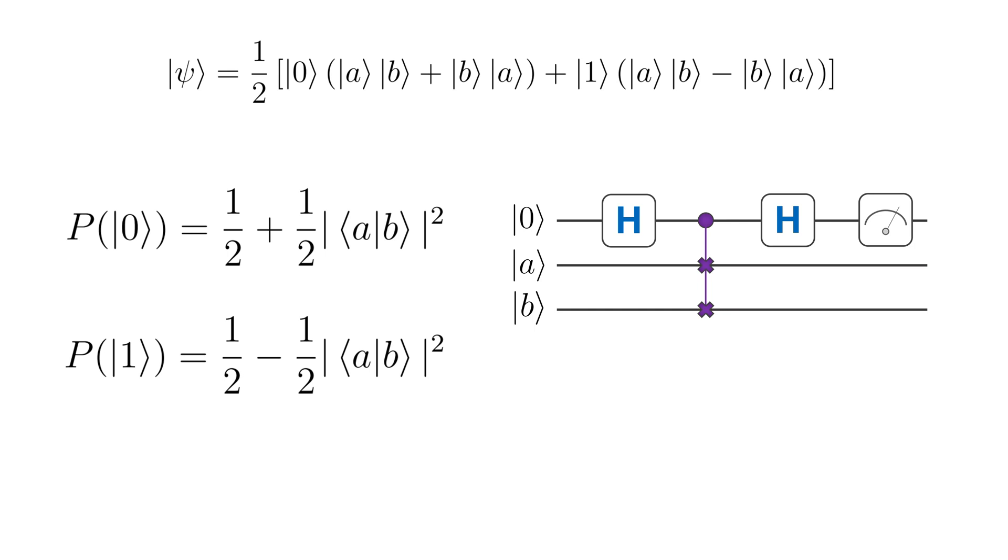In experiment, we execute the quantum circuit n times and get a measurement result m_i. m equal to 0 means state 0 and m equal to 1 means state 1. Then we can evaluate the squared inner product from the measurement results. The equality is fulfilled only if the number of measurements tends to infinity.